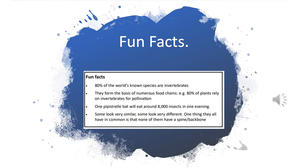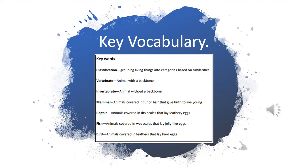Some invertebrates look very similar, some look very different, but one thing they all have in common is that none of them have a spine or backbone. Keywords you'll come across while studying our non-chronological report text: classification — grouping living things into categories based on similarities; vertebrate — an animal with a backbone; invertebrate — an animal without a backbone; mammal — animals covered in fur or hair that give birth to live young; reptile — animals covered in dry scales that lay leathery eggs; fish — animals covered in wet scales that lay jelly-like eggs; bird — animals covered in feathers that lay hard eggs.